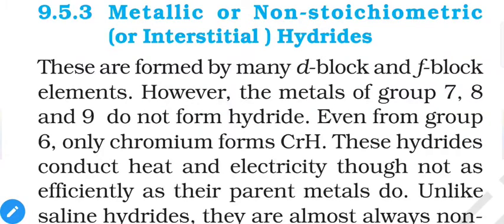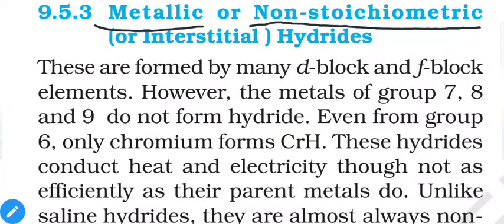The third category is metallic, non-stoichiometric, or interstitial hydrides — three different names, all meaning something specific. Metallic represents that these hydrides mainly contain metallic bonds; hydrogen does not participate in metallic bond formation. Metallic bonds are formed between metal atoms and hydrogens are trapped inside the voids or empty spaces between the metal atoms. Non-stoichiometric means these compounds do not have a proper ratio of elements, so fractional values appear. Interstitial means particles trapped in voids occupy positions that are not actually their own.